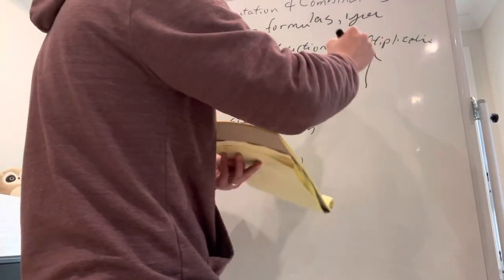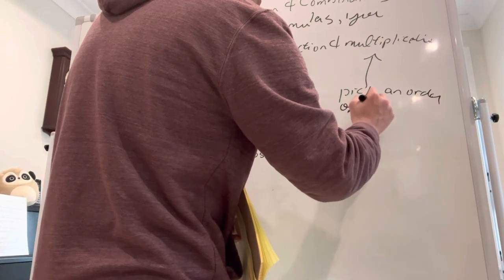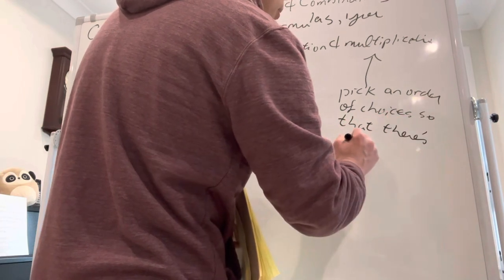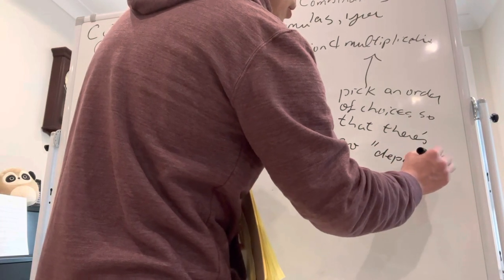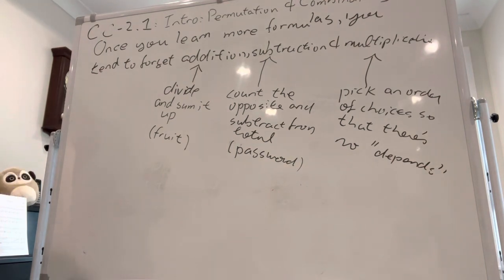The final one, multiplication, is what we just went through, which is pick an order of choices so that there's no 'depends.' 'Depends' here meaning if you pick a digit or when you make a choice and then later on when you say how many choices are there, if your answer is 'it depends on what we made at the beginning,' then think of a different order of making your choices. I'm going to talk about permutation and combination—that should be really easy—and then we'll break. But this is really important: highlight it, because once we learn more formulas, we tend to forget about the really basic stuff, which is just counting.